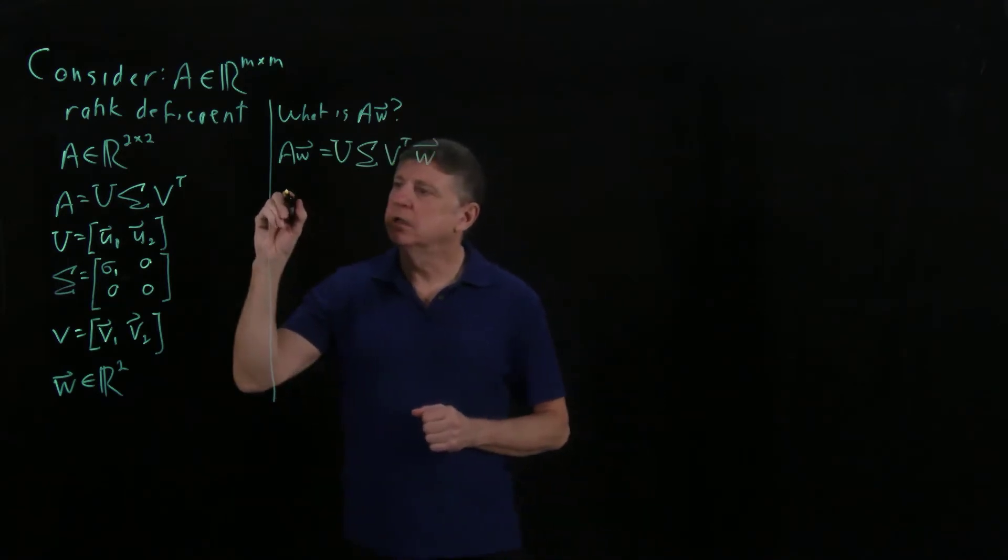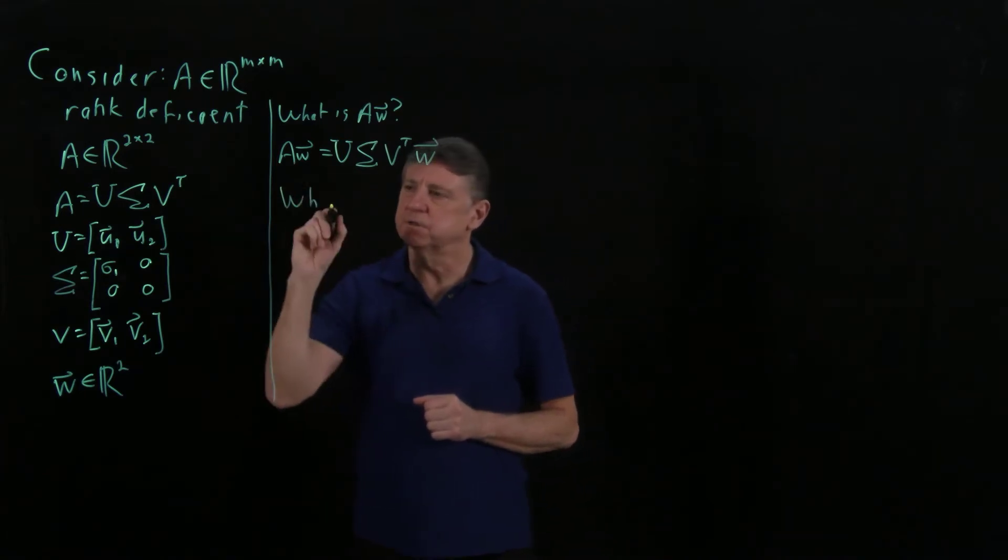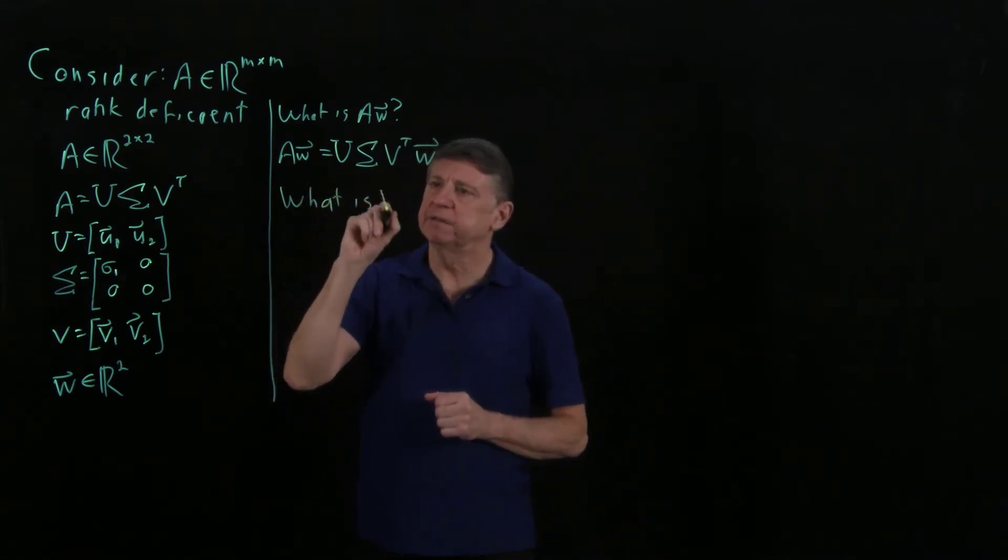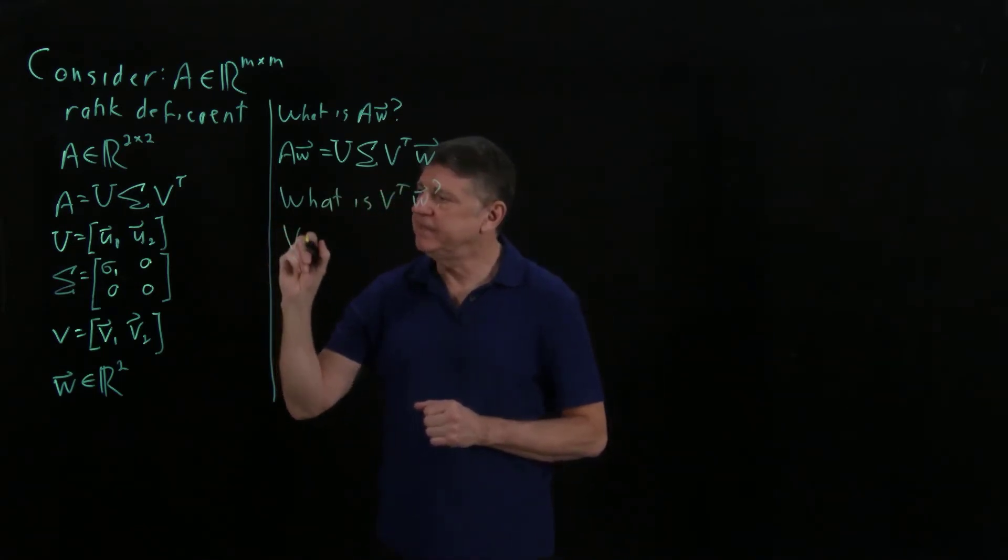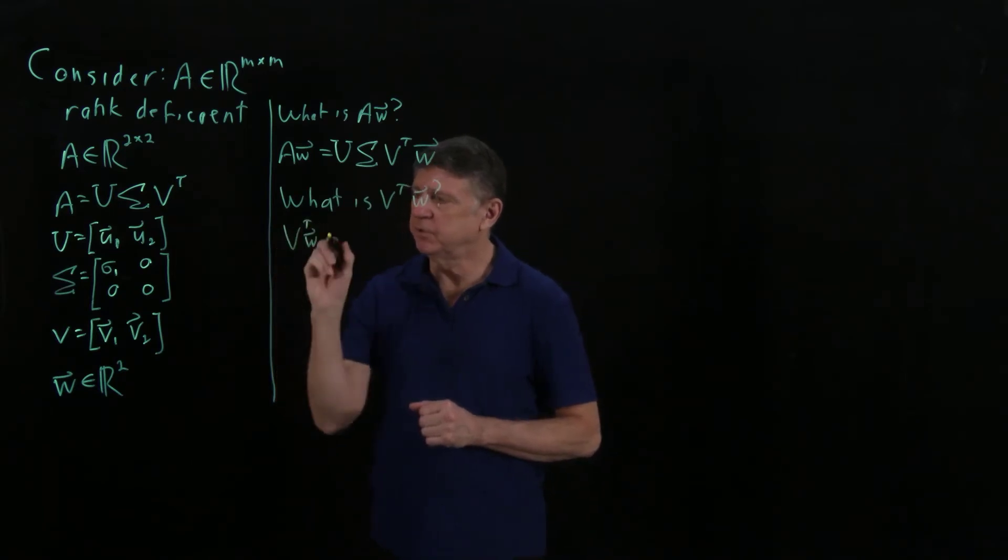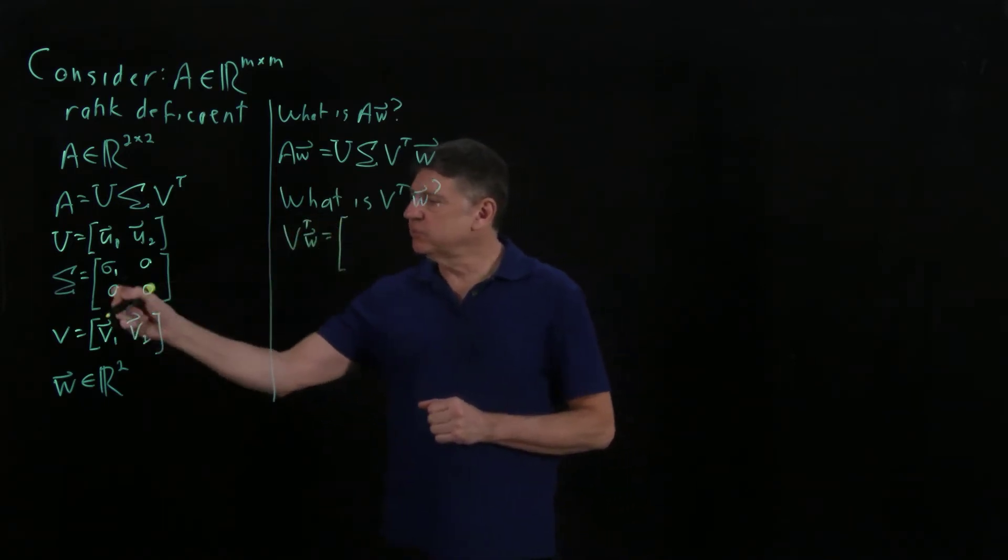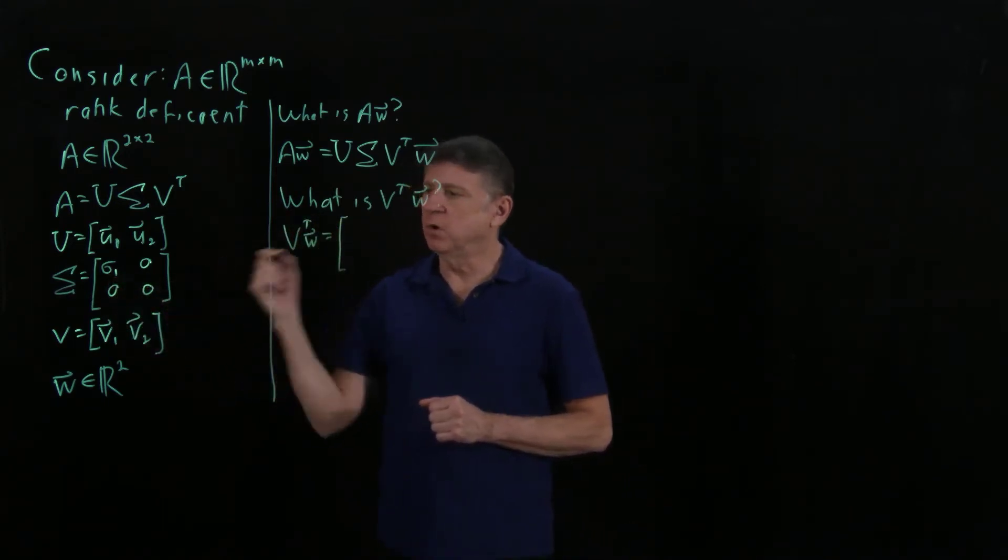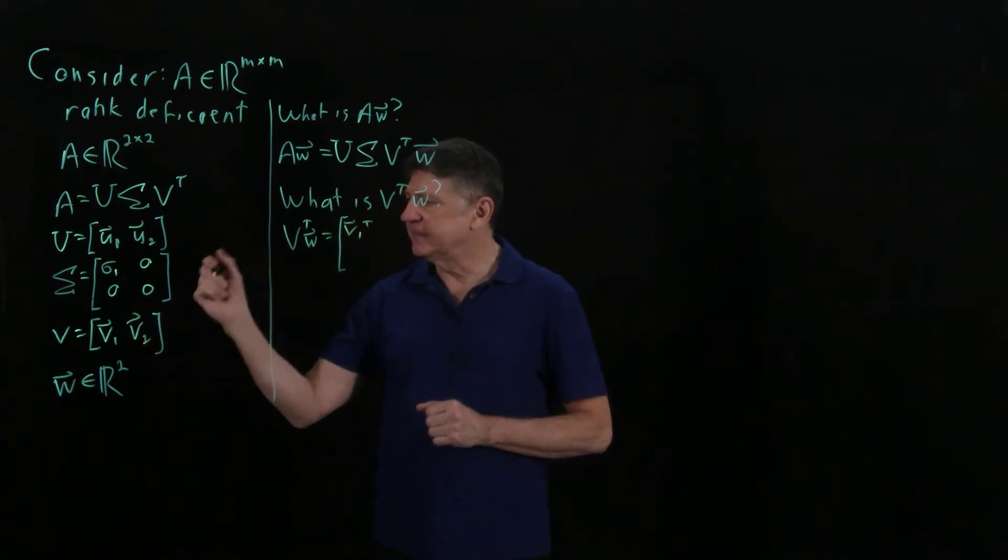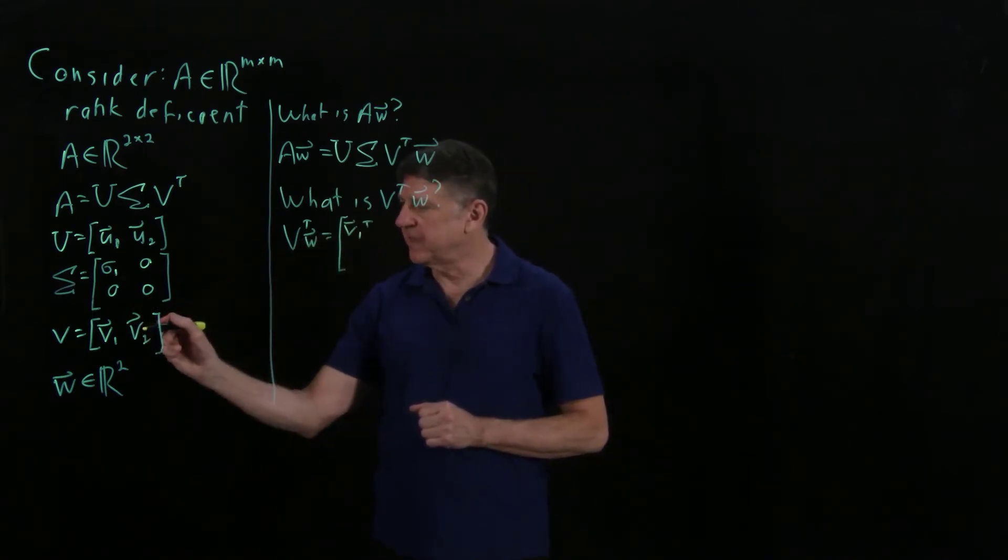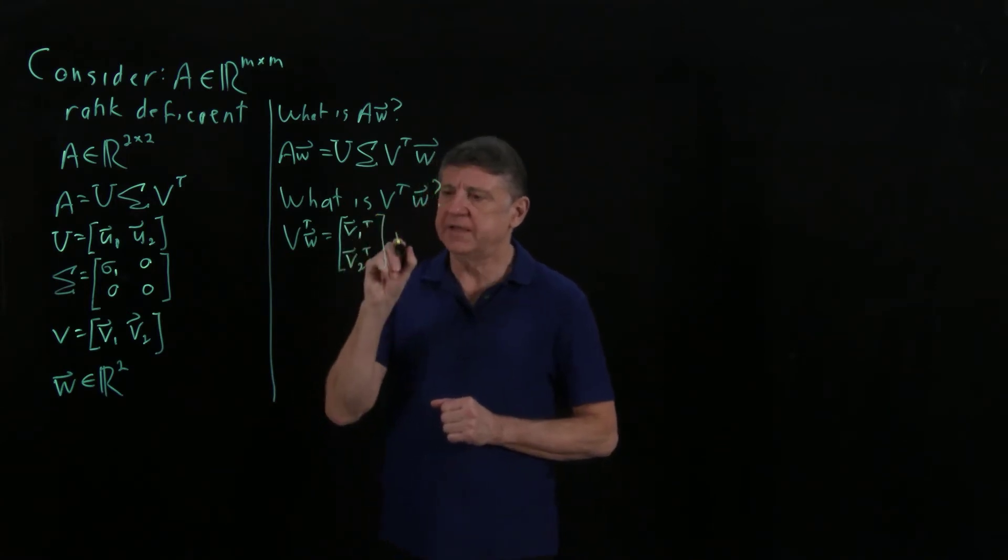So now, let's ask, let's take this from the right and move to the left. So what is V transpose W? Well, that V transpose W, that looks like, so what is V transpose? Well, if the first column of V is V1, then the first row of V transpose is V1 transpose, and the second row of V transpose has to be V2 transpose. So that's V2 transpose, and that's multiplied by W.